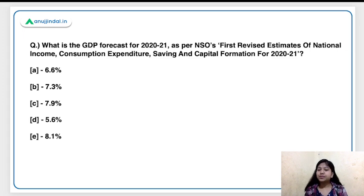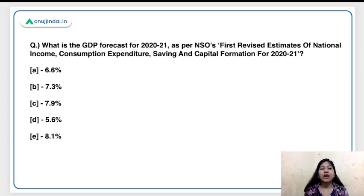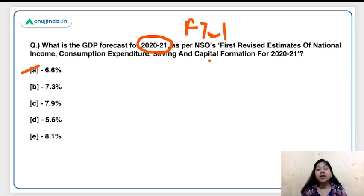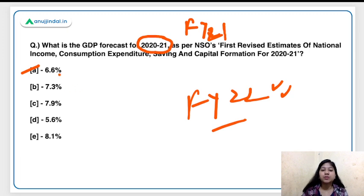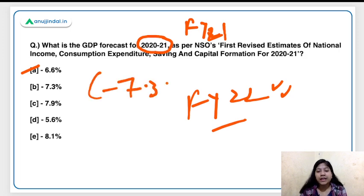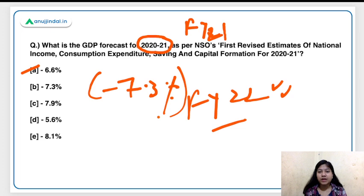The first question is: what is the GDP forecast for 2020–21 as per NSO's first revised estimates of national income, consumption expenditure, saving, and capital formation? The right answer is option A: minus 6.6 percent. These estimates are for FY21, the 'corona year' 2020–21, showing a contraction of 6.6 percent.